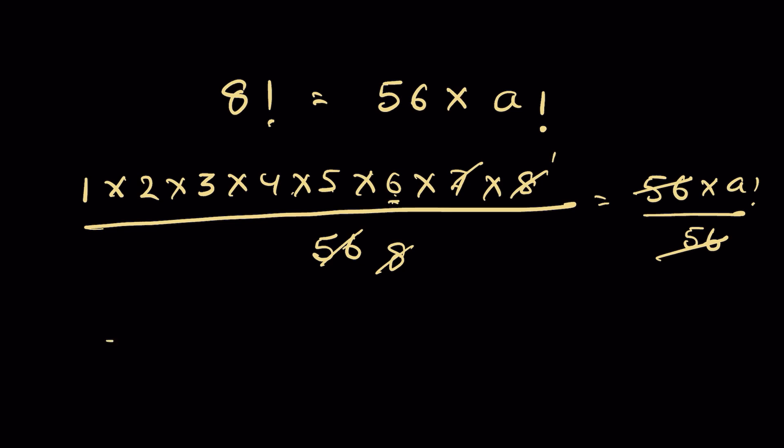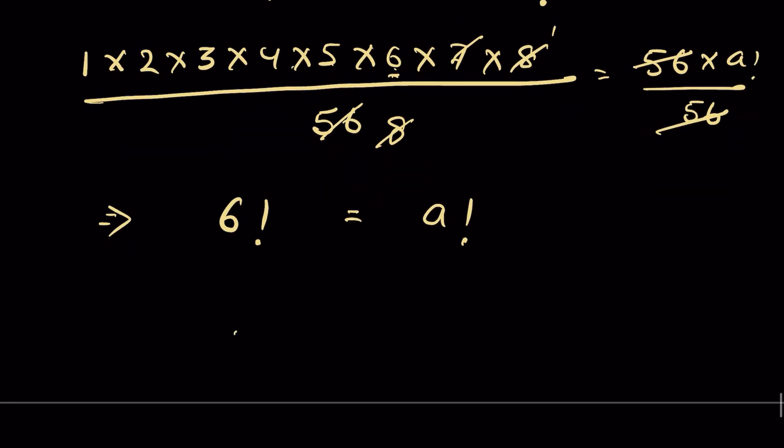So 6 factorial equals a factorial. A equals 6. How did you solve it? Let me know in the comment section. Thanks for watching.